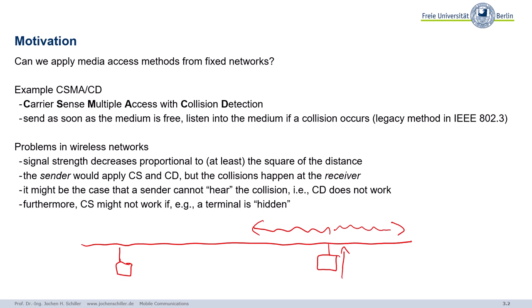While sending, you continue to listen into the medium. Why? Because if someone else also started sending at basically the same time, we will have a collision. This collision propagates along the wire and you as a sender will also hear it — that's the idea of collision detection. CSMA/CD is a classical scheme from fixed networks. It works because the wire has a limited length and within that length the signals are strong enough so that you can still hear the collision.